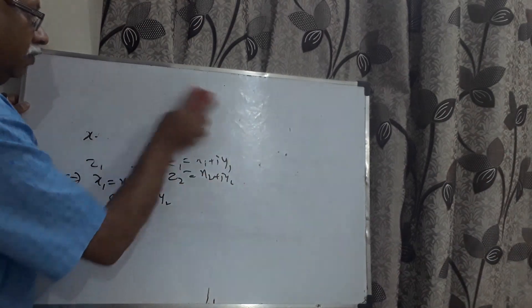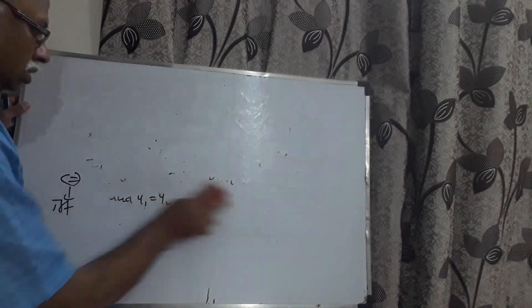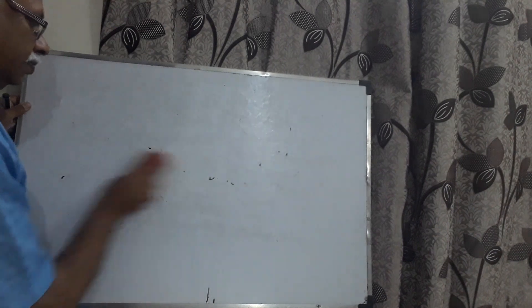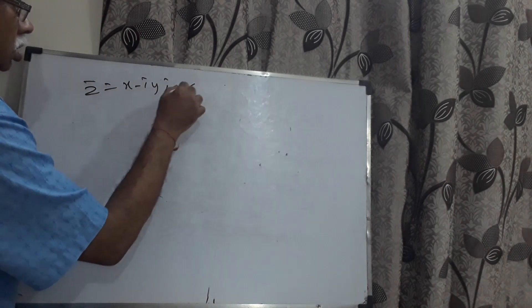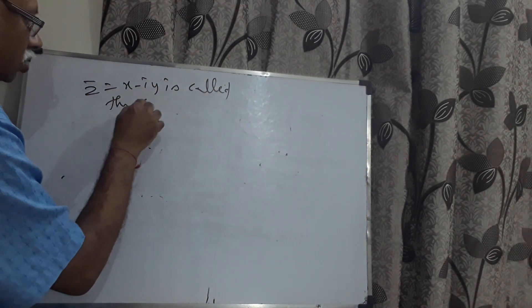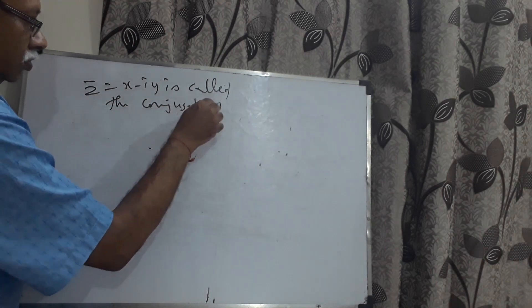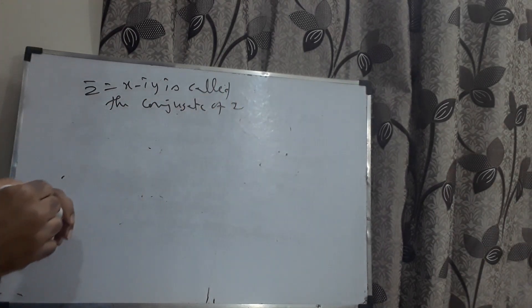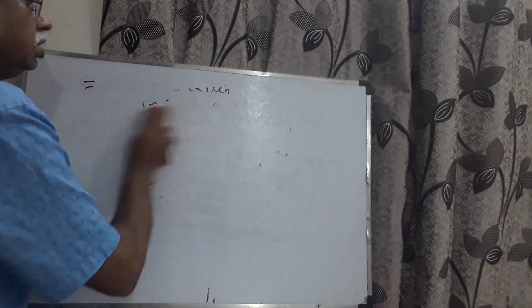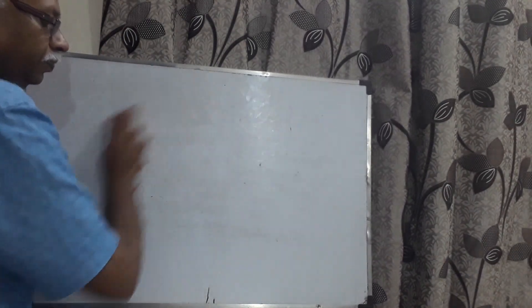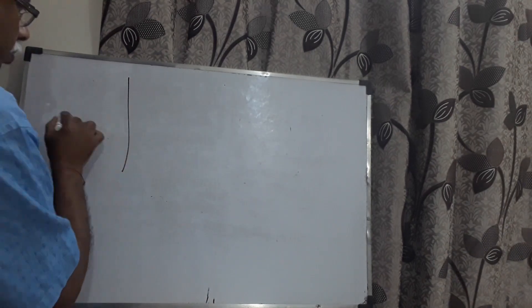If z equals x plus iy, then z-bar equals x minus iy is known as the conjugate of the complex number. These are all just definitions — the conjugate of z. This is how we get the introduction about complex numbers, and there is a small geometric representation to follow.